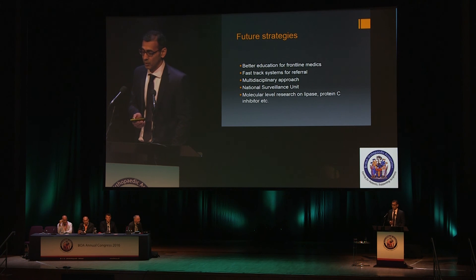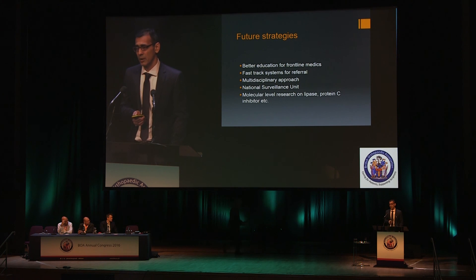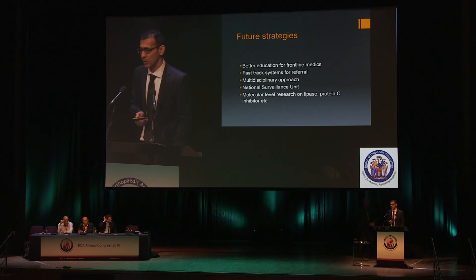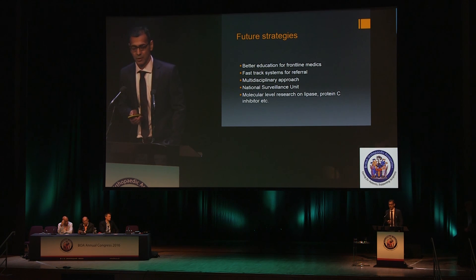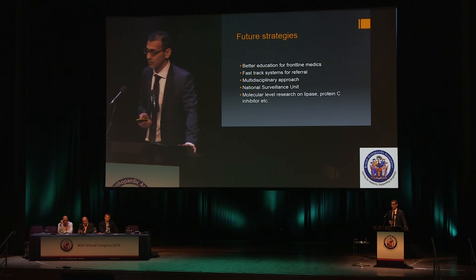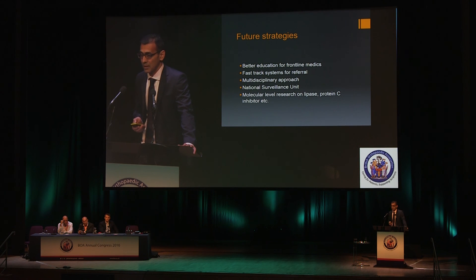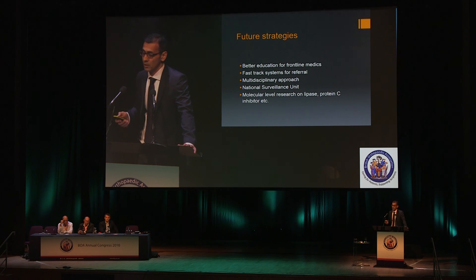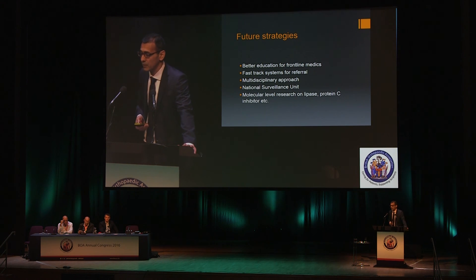Where should we go from here? We actually don't know where we are — there's very little published literature from the UK. We need to publish more: our microbiology, our survival figures. We need to educate frontline medics — A&E staff and medical teams who will be seeing these patients — a lot more. We need to develop fast-track referral systems so that as soon as a patient is suspected of having necrotizing fasciitis, the appropriate team is fast-tracked and the patient taken to theatre as soon as possible.